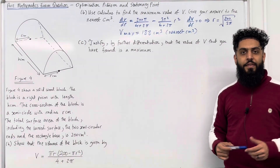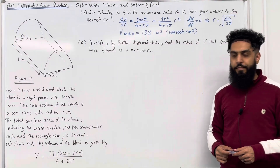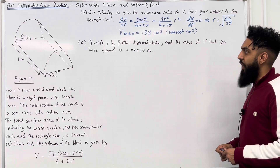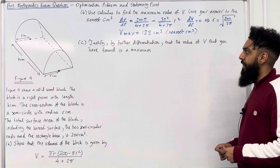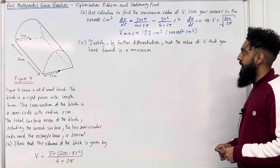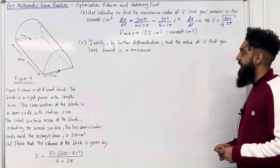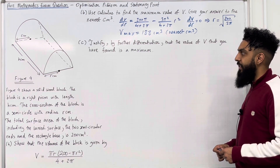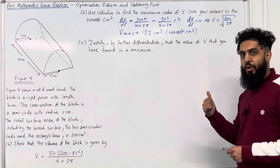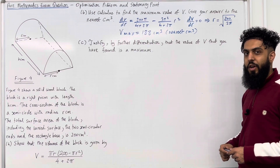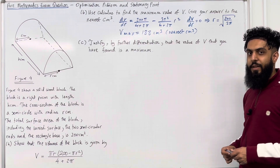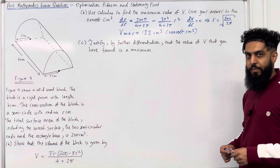Moving on to part C of the exam question: justify by further differentiation that the value of V you have found is a maximum. Please pause the video, have a go at part C, and once you've got your complete solution then play the video.